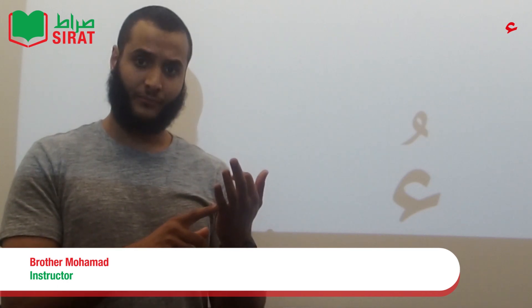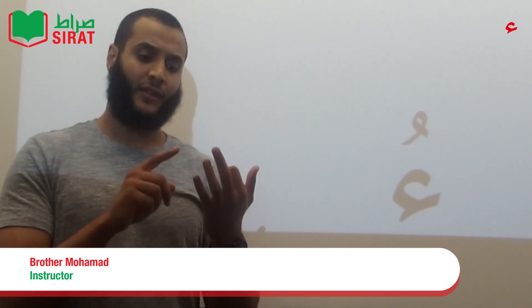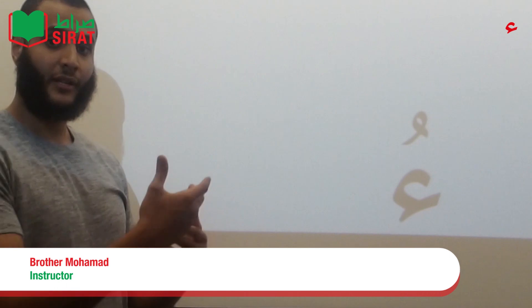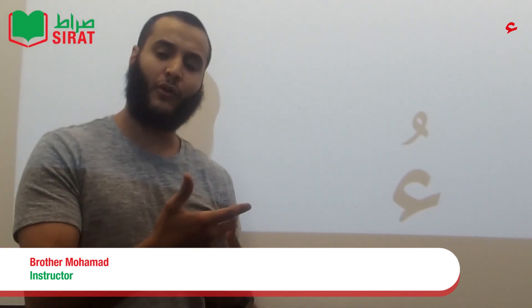So you have three major vowel signs: the Fathah, the Kessarah, and the Dhammah. Just remember those names, and remember how it's symbolized with the letter, because we'll be referring to it over and over again in this series.